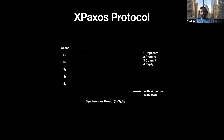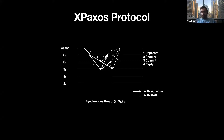In the general case, XPaxos works as follows. The key difference is that whatever the primary does upon receiving a commit message from a replica is also done by all of the active replicas. If a client times out without committing a request, it broadcasts the request to all active replicas. Active replicas then forward the request to the primary and trigger a retransmission timer. If the correct active replicas expect the client's request to be committed before the timer expires and it doesn't, then it triggers a view change.